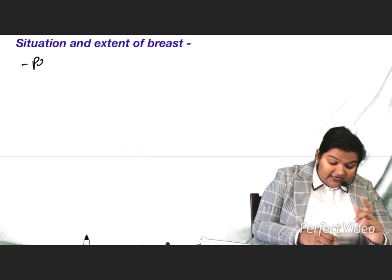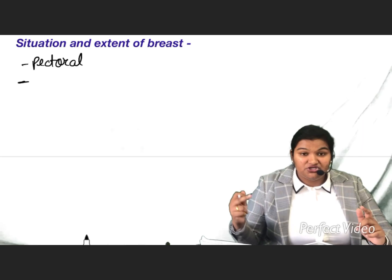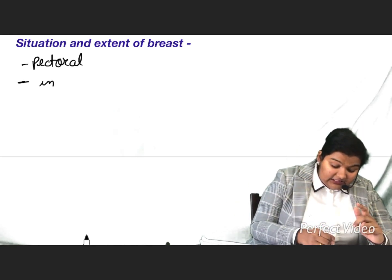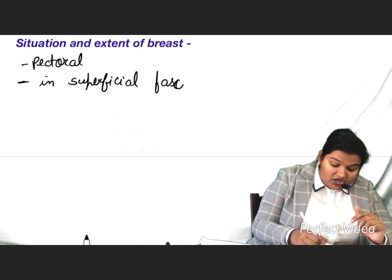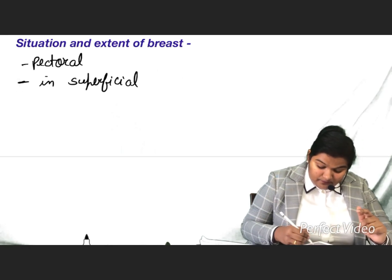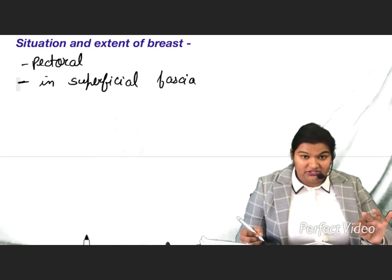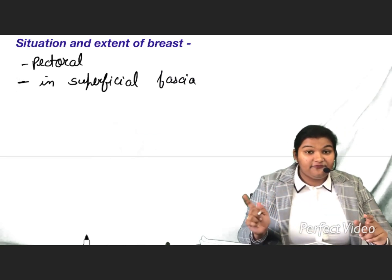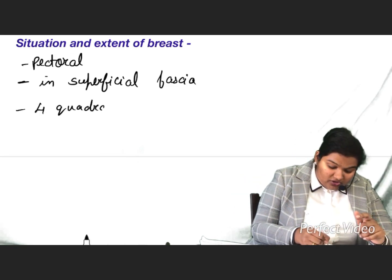Breast is situated in the pectoral region, and it lies in the superficial fascia of the pectoral region. The breast is divided into four quadrants.